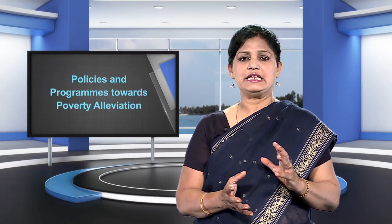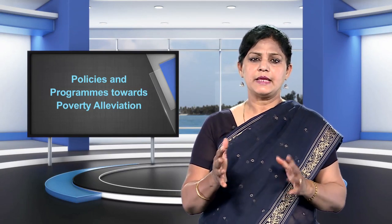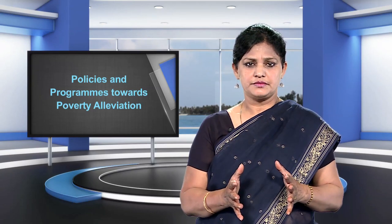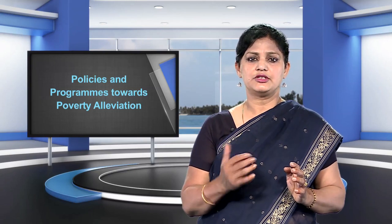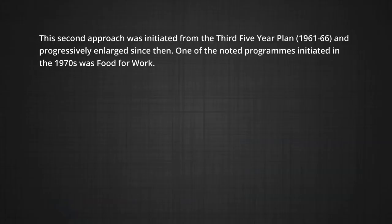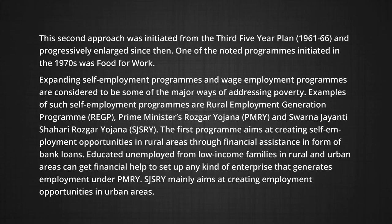Looking for alternatives to specifically address the poor, policy makers felt that incomes and employment for the poor could be raised through the creation of additional assets and work generation, achieved through specific poverty alleviation programs. This second approach was initiated from the Third Five Year Plan during 1961-66 and progressively enlarged since then. One of the noted programs initiated in the 1970s was Food for Work. Expanding self-employment programs and wage employment programs are considered major ways of addressing poverty. Examples of such self-employment programs are the Rural Employment Generation Programme (REGP), Prime Minister's Rojgar Yojana (PMRY), and Swarna Jayanti Shahri Rojgar Yojana (SJSRY).